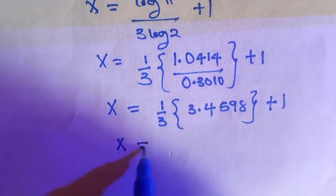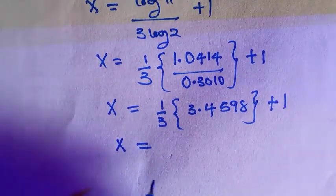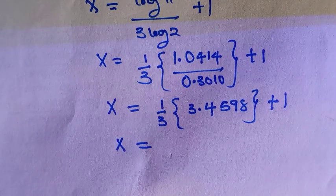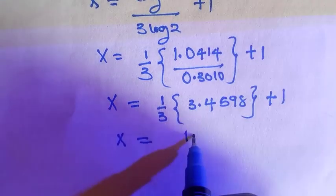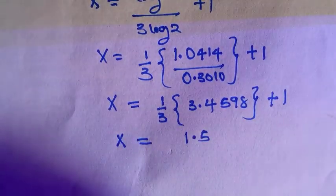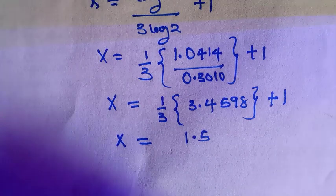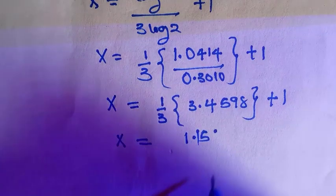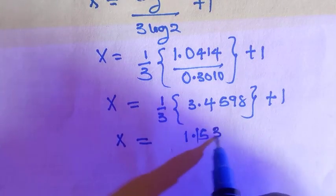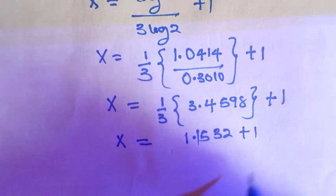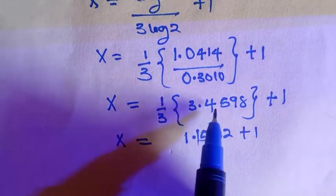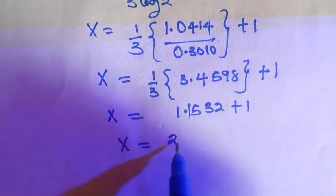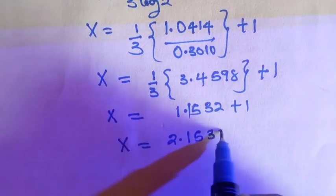And if you divide 3.4598 by 3, we are going to get 1.1532 plus 1. And by adding these two together, we have x equals 2.1532.